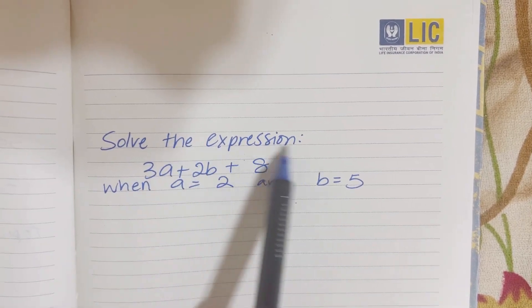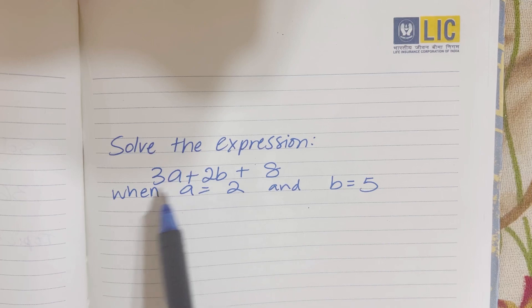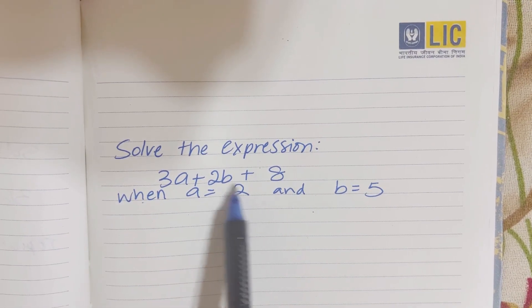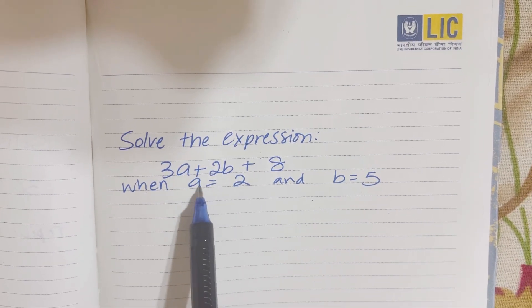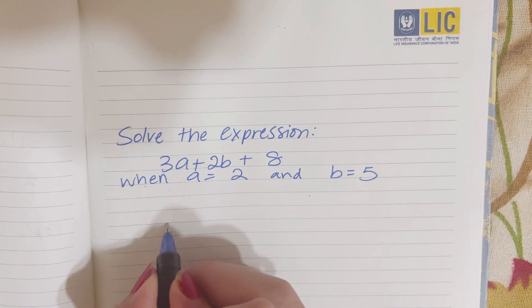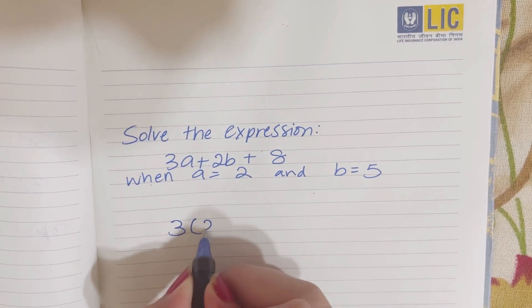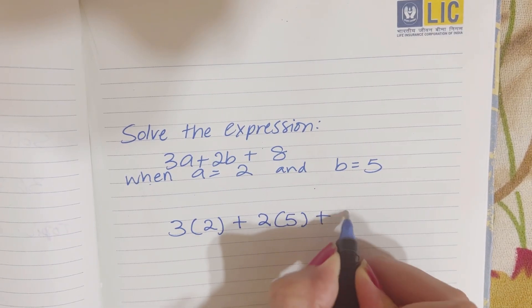The next question says to solve the expression when a is equal to 2 and b is equal to 5. It's very simple. You just replace the a with 2 and the b with 5. So you have 3 multiplied by 2 plus 2 multiplied by 5 plus 8.